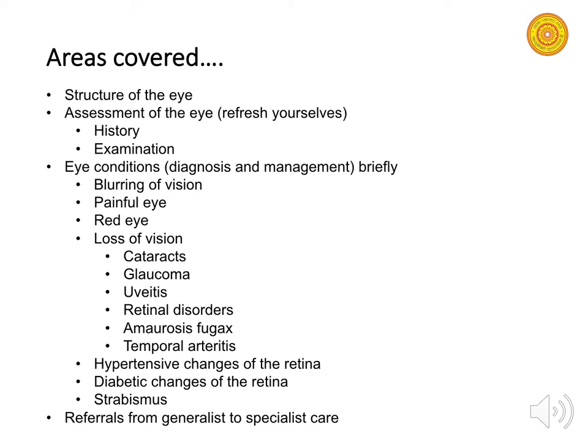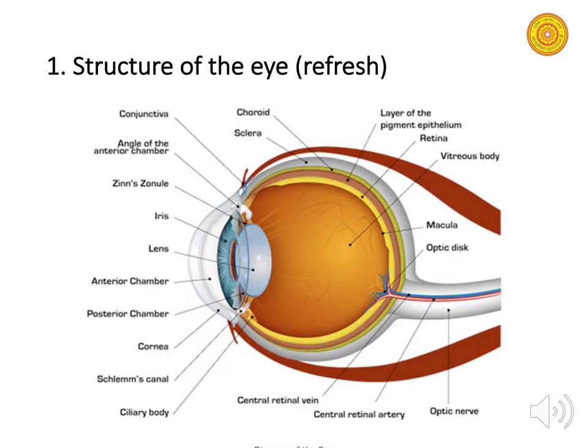We'll also discuss how to do referrals from general to specialist care. The optic nerve starts from the back of the eye and gets signals into the brain. Around the eye you also have extraocular muscles responsible for eye movement.